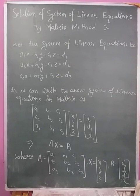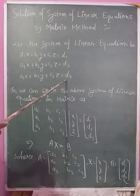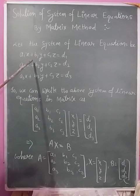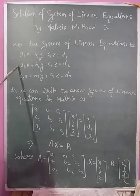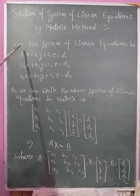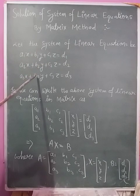Let the system of linear equations be a1x + b1y + c1z = d1, second equation a2x + b2y + c2z = d2, third equation a3x + b3y + c3z = d3. So we have system of linear equations in three equations, first, second, third.